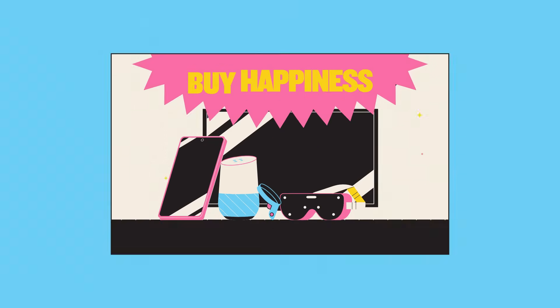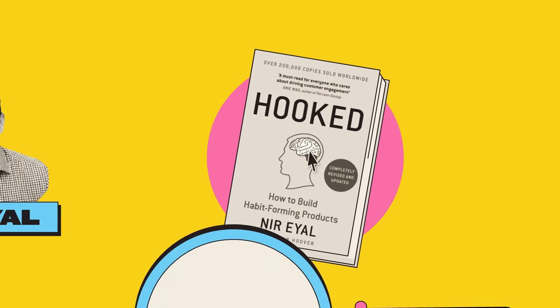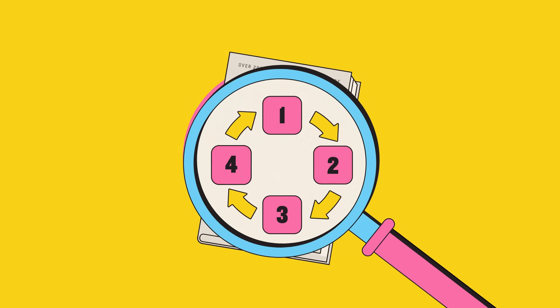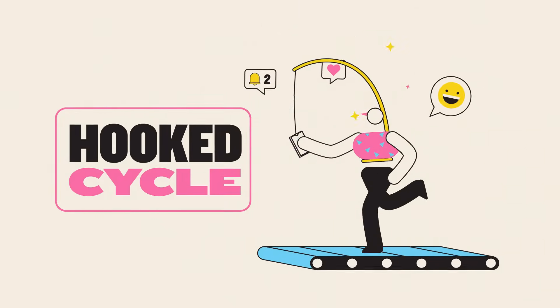As if to show just how blatant this can be, Nir Eyal's 2014 book, Hooked, is explicitly pitched as a guide to designing habit-forming products. What he calls the Hooked Cycle has four stages.